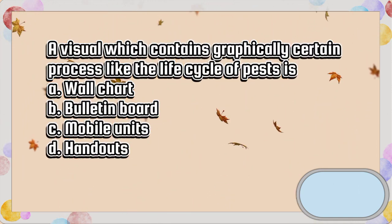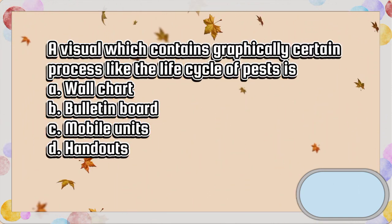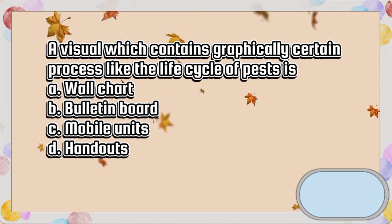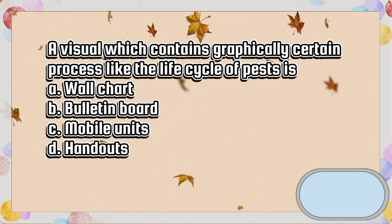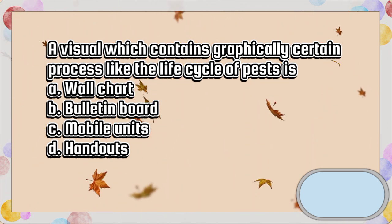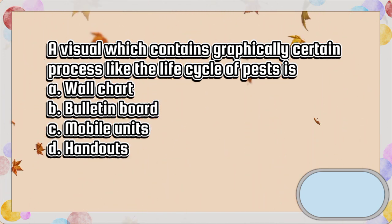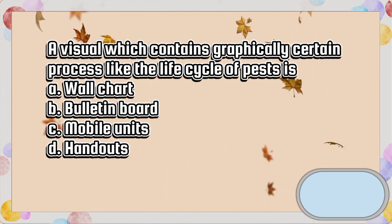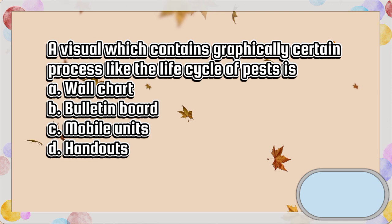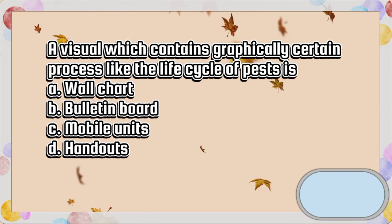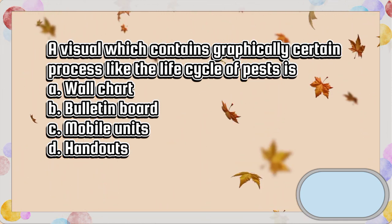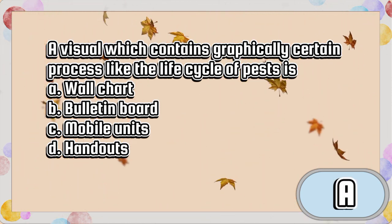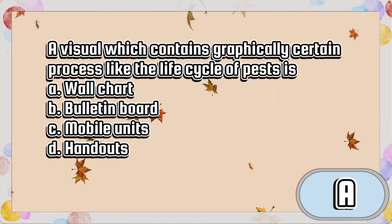A visual which contains graphically certain processes like the life cycle of pests is: A. Wall chart. B. Bulletin board. C. Mobile units. D. Handouts. The answer is letter A.